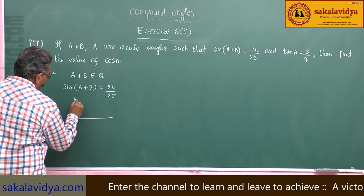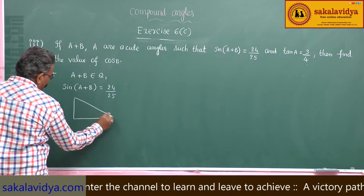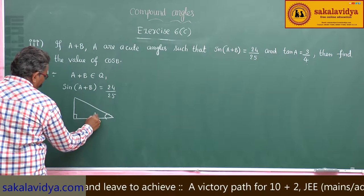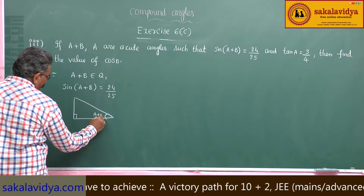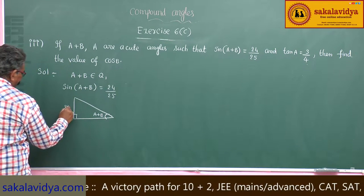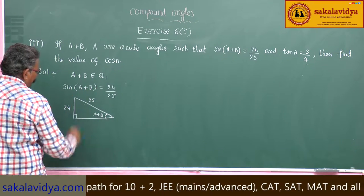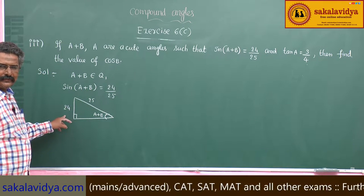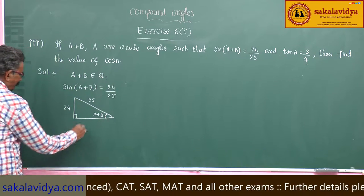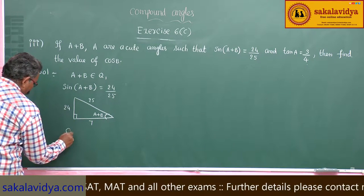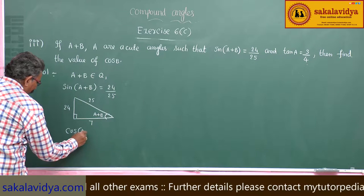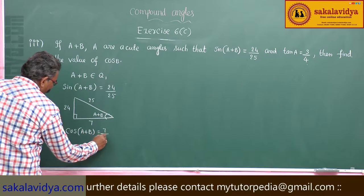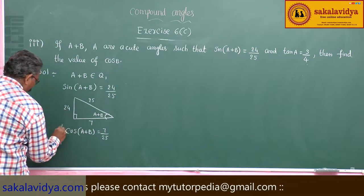Let us take a right triangle for angle (A+B). The opposite side is 24 and the hypotenuse is 25. The adjacent side is the square root of 625 minus 576, which is the square root of 49, equal to 7. So cos(A+B) = 7/25.